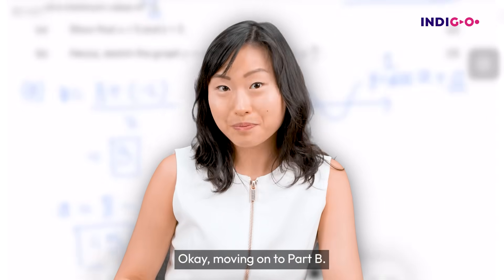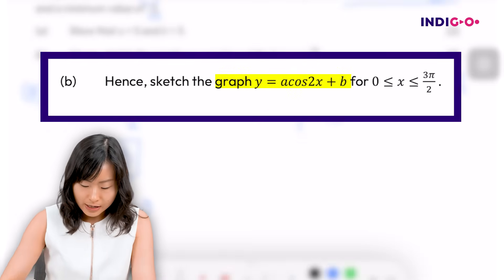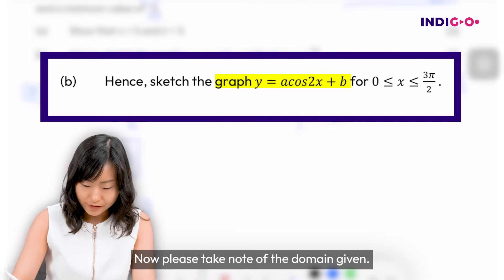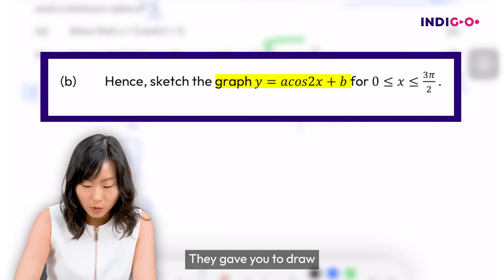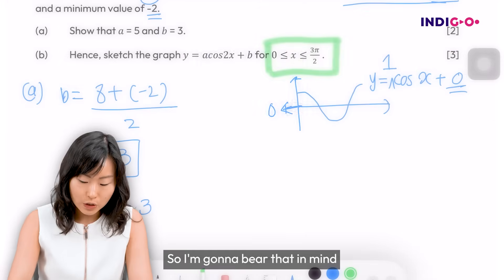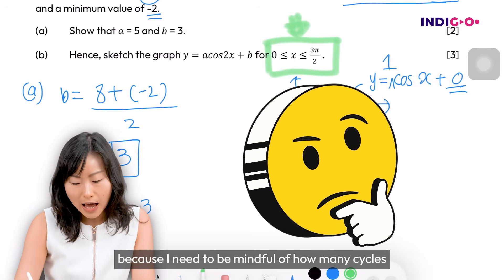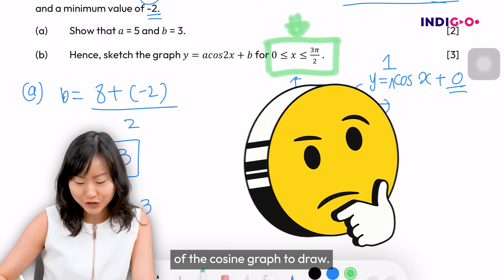Okay, moving on to part B. It says hence sketch the graph of a cos(2x) + b. Please take note of the domain given - they gave you to draw only from 0 to 3π/2. So I'm going to bear that in mind because I need to be mindful of how many cycles of the cosine graph to draw.